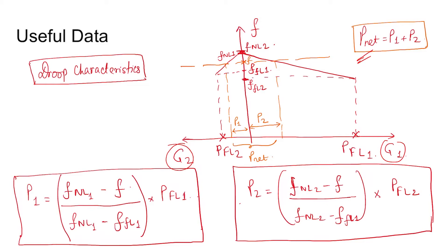As specified, the generator having larger capacity will share more load and the one with smaller capacity will share lesser load. This is given by the load shared by generator one: P1 = (f_NL1 - f) / (f_NL1 - f_FL1) multiplied by full load capacity of the generator.